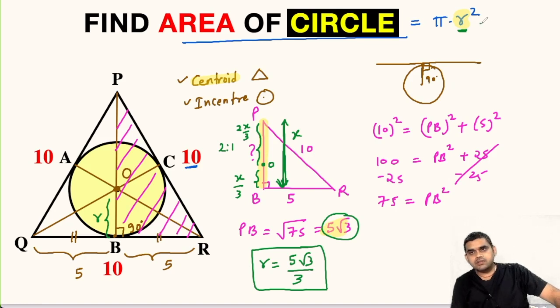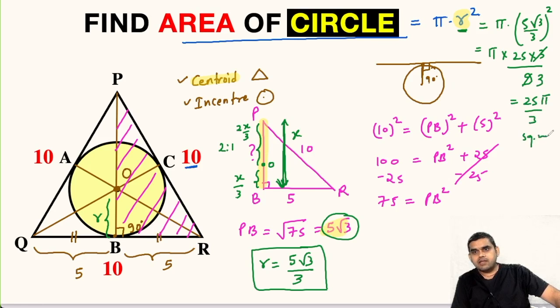Simply we have to substitute its value here. So this will be pi times 5 root 3 divided by 3 whole squared. So this will be pi times 25 times 3 divided by 9. So this will cancel 3 times. So 25 pi upon 3 square units is the area of the circle.